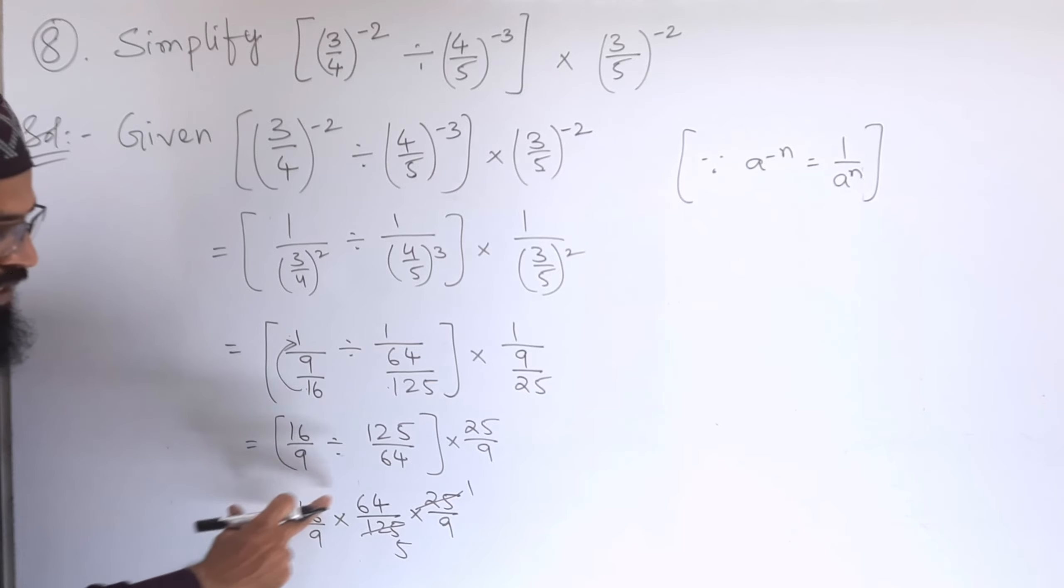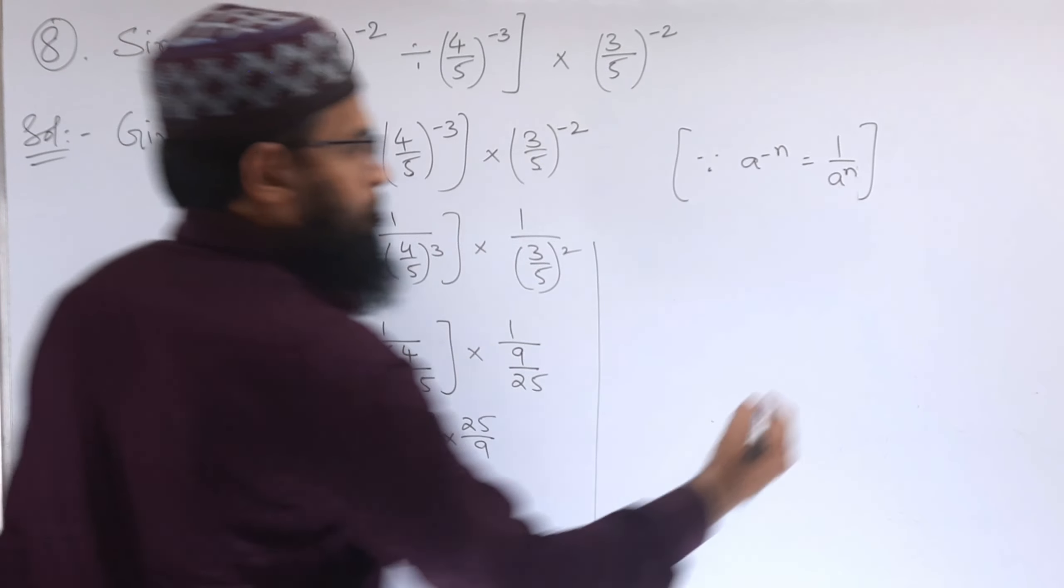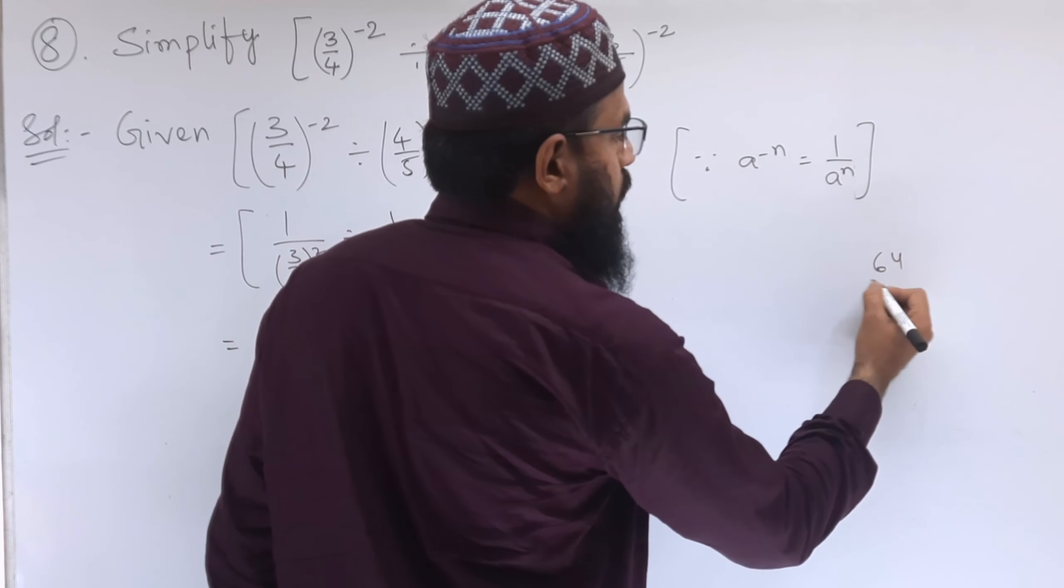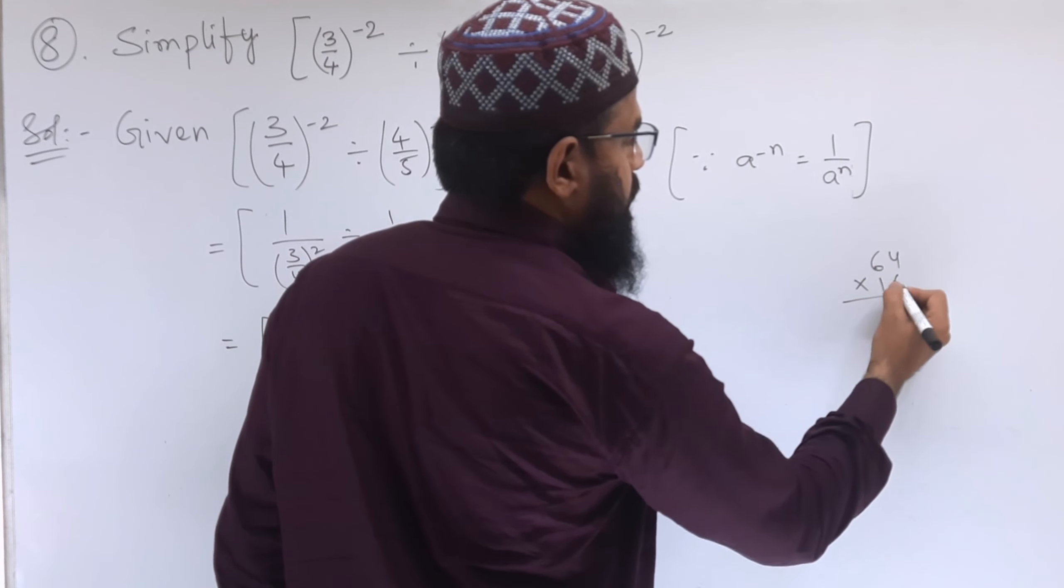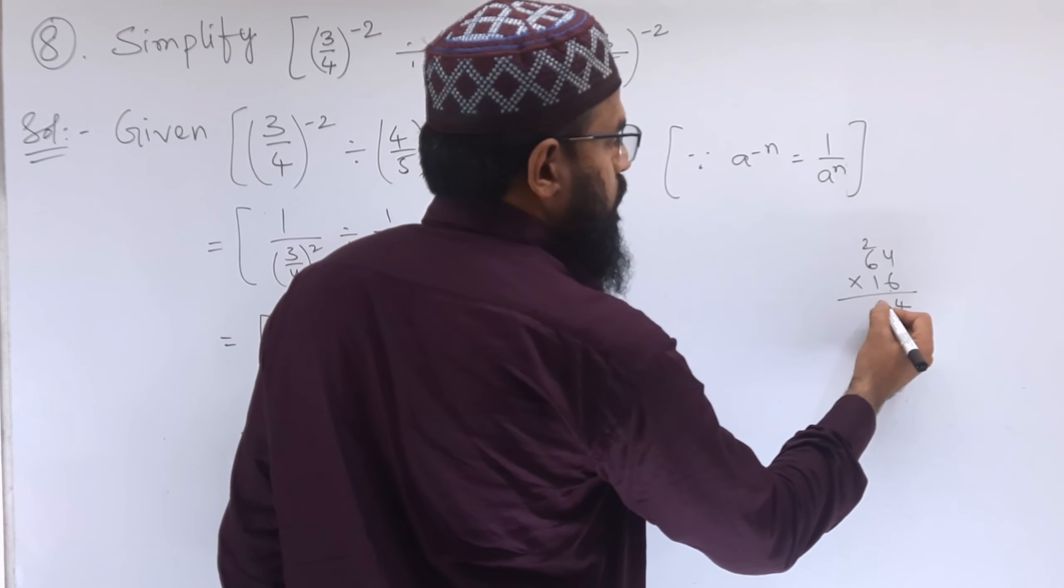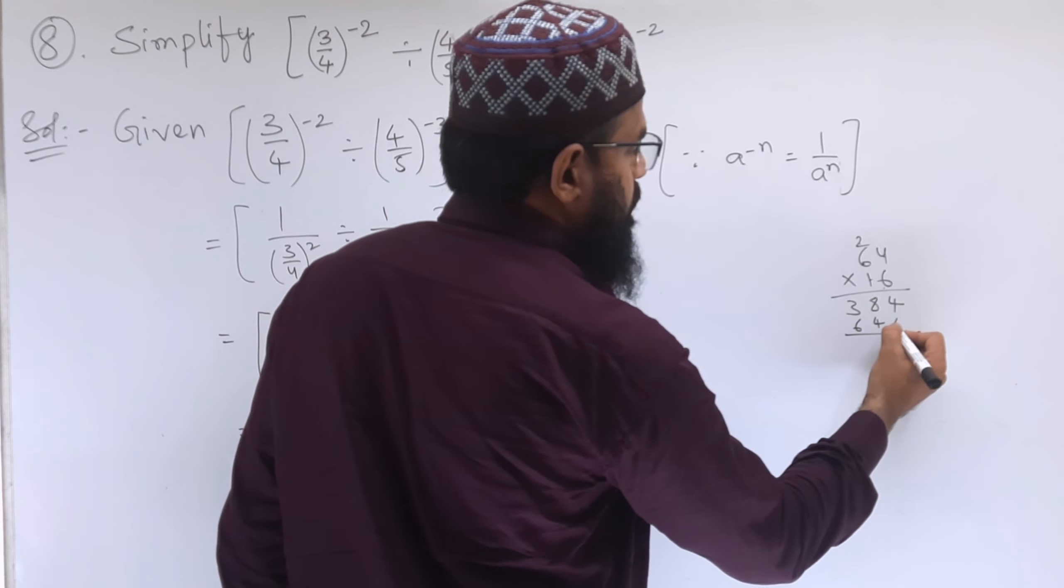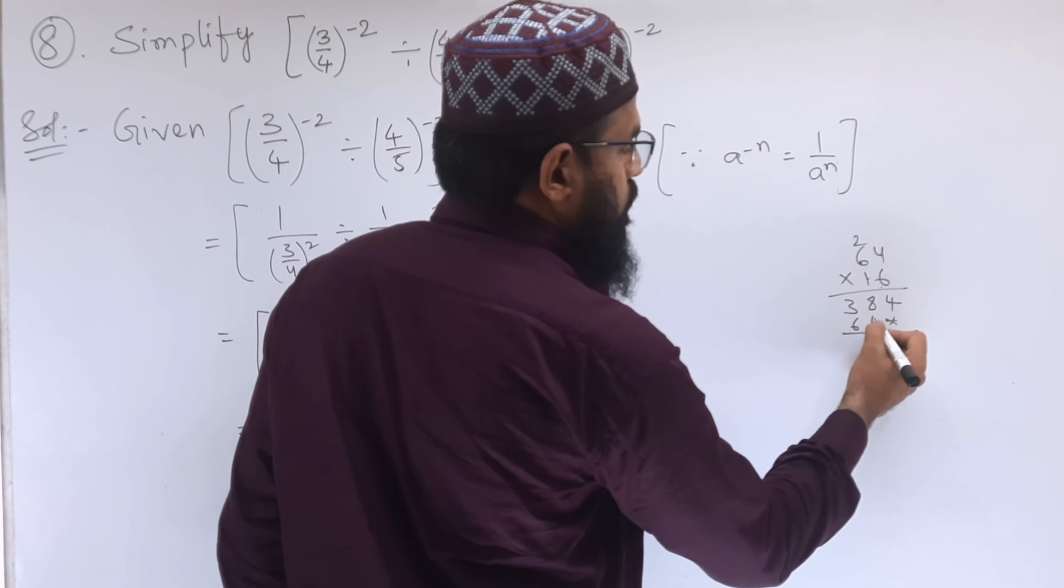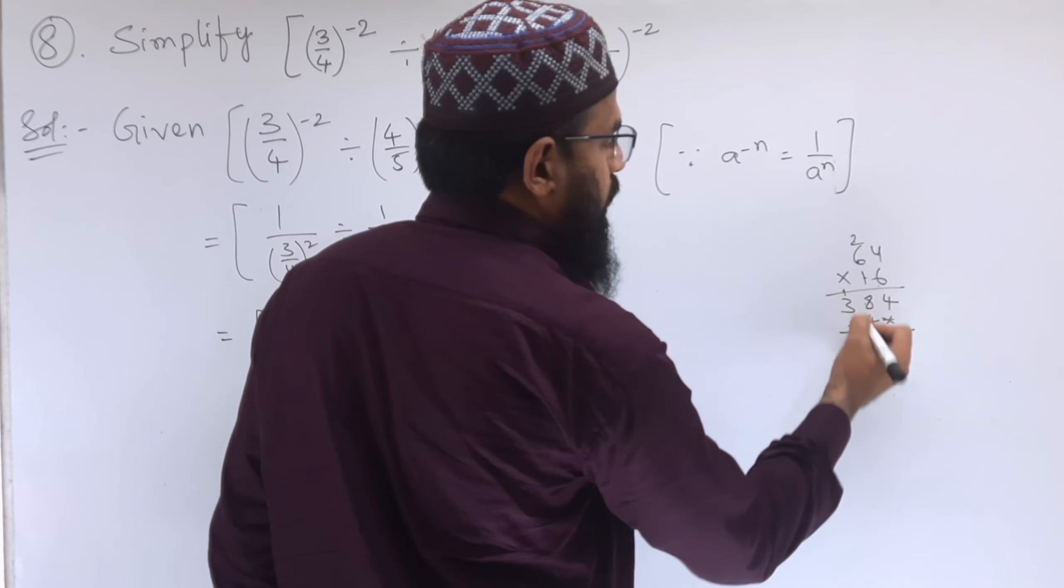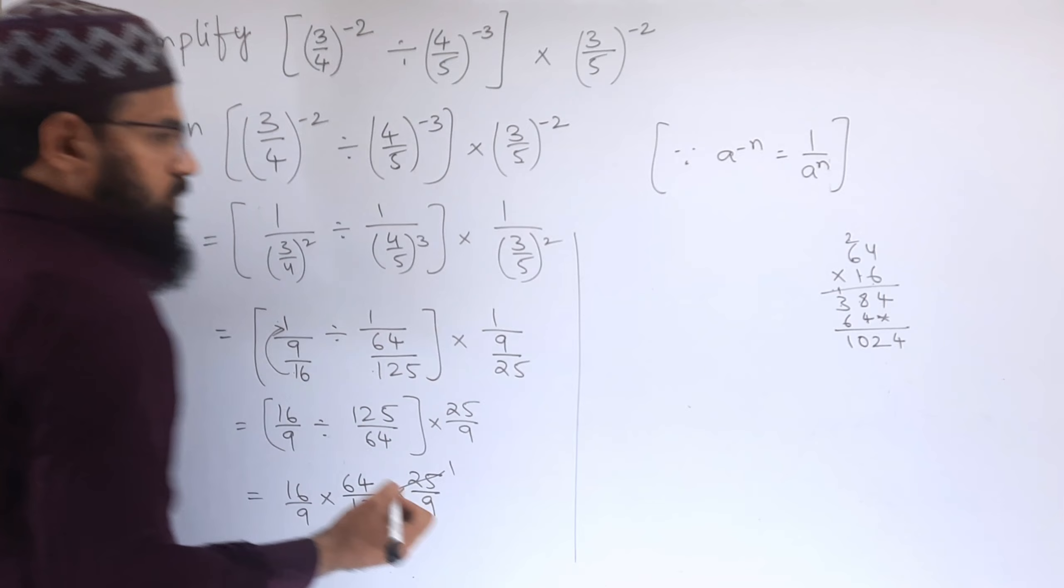Next, 16, 64 is 64. That will be 64 into 16. 6 times 4 is 24, 6 is 36 plus 2, 38. 1 times 4 is 4, 1 times 6 is 6, 4. 4 plus 8 is 12, 1. 6 plus 3, 9 plus 1 is 10.